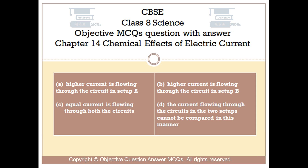Option A: higher current is flowing through the circuit in setup A. Option B: higher current is flowing through the circuit in setup B. Option C: equal current is flowing through both the circuits. Option D: the current flowing through the circuits in the two setups cannot be compared in this manner.